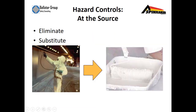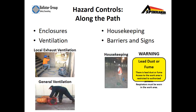Controlling hazards at the source includes eliminating or substituting the hazard for something less toxic. Controlling hazards along the path includes enclosures, ventilation, housekeeping, barriers, and signs — the goal here is to protect other workers from the immediate hazard itself.